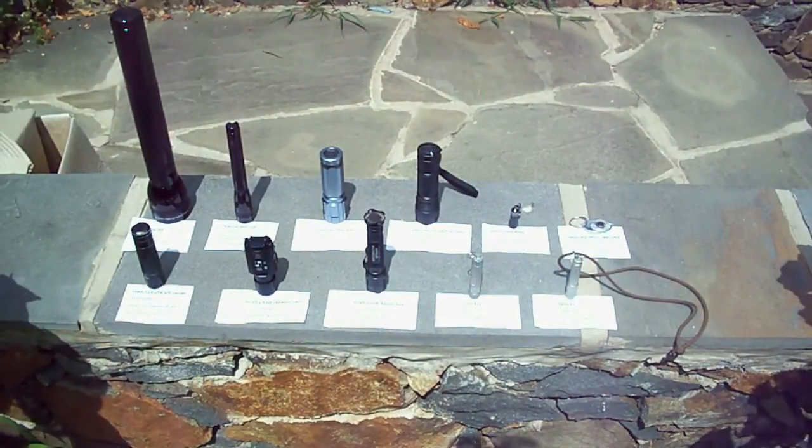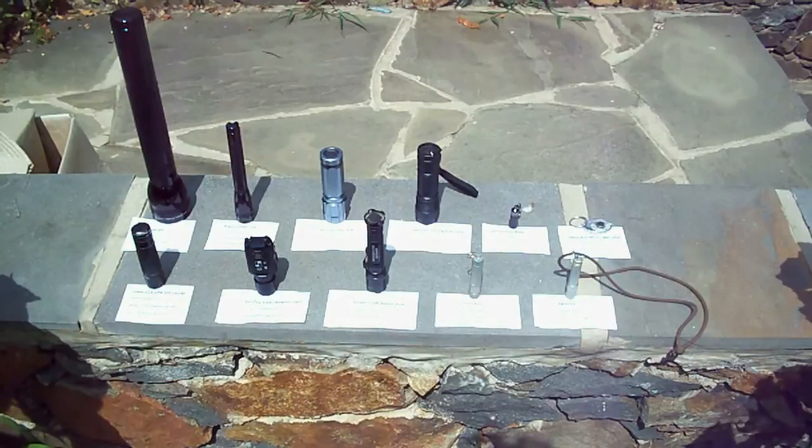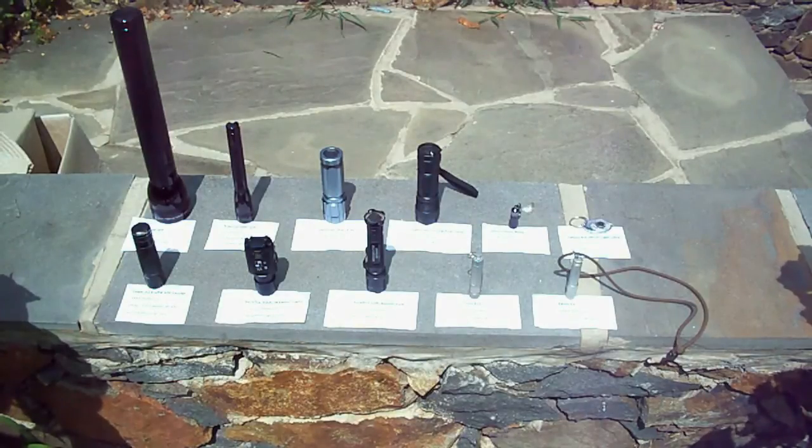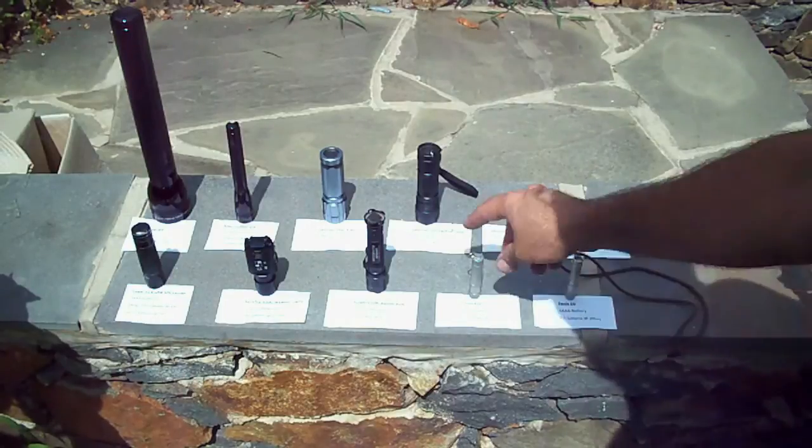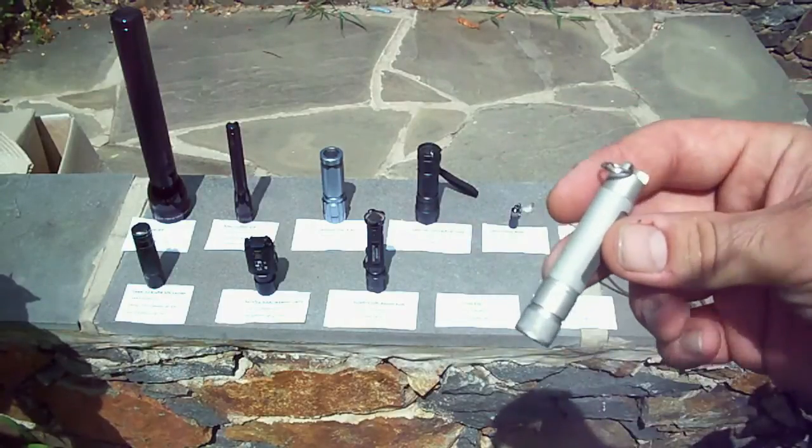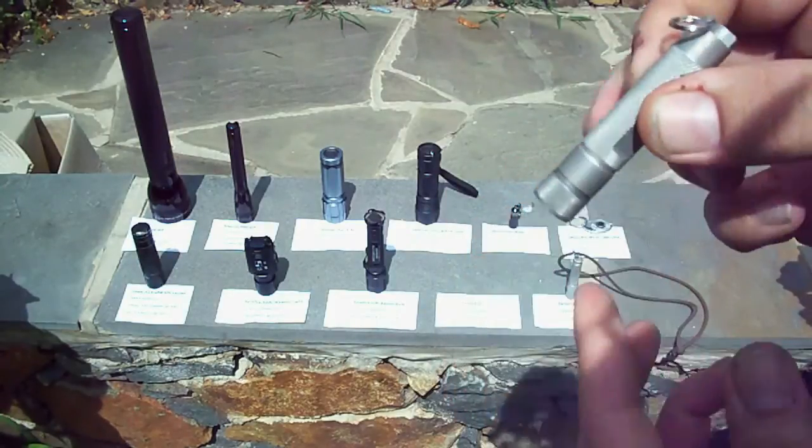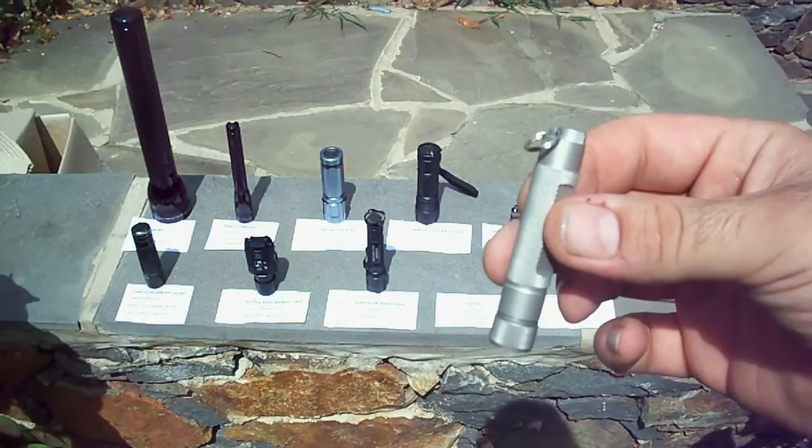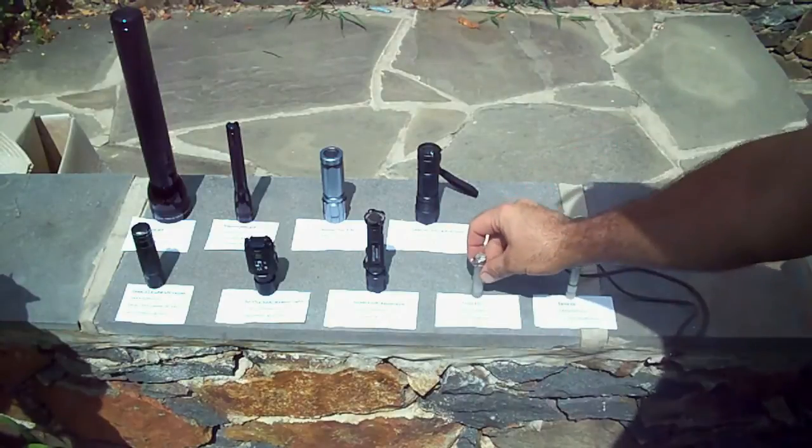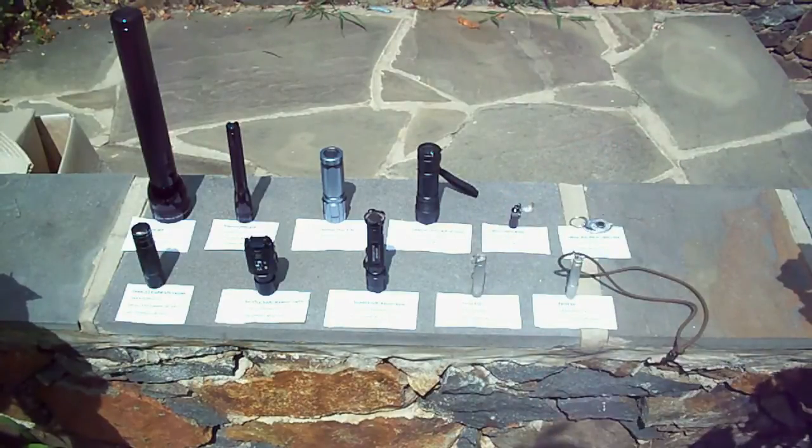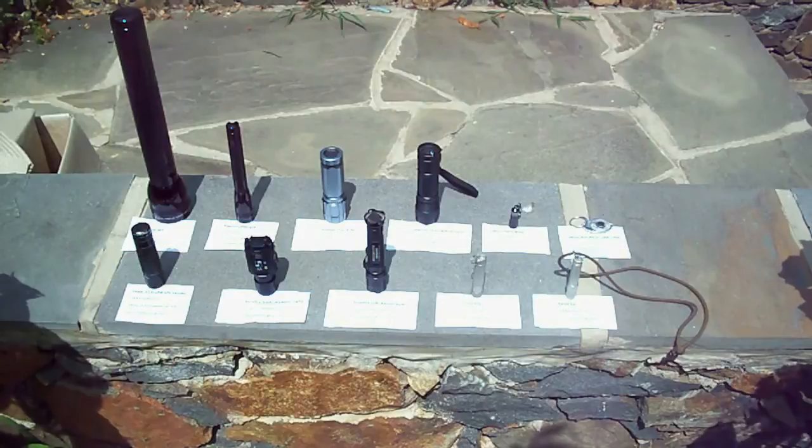Twist switches have their place and I believe that that place is in the smaller flashlights where you're trying to save on space by not putting a regular switch on the end of the light. An example of this would be this Fenix E01. This is a twist operation light and for a light this size I think that's perfect. The addition of a tail cap switch to a light that size would add overall length, and if portability is your thing, twist switches are probably the way to go.